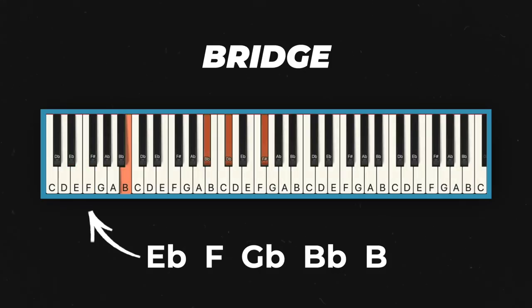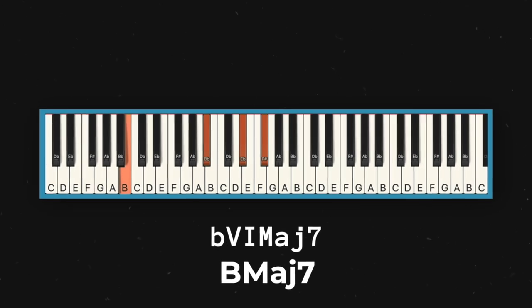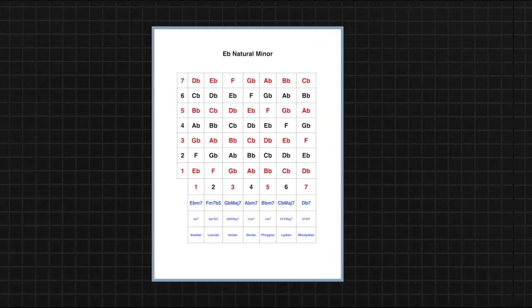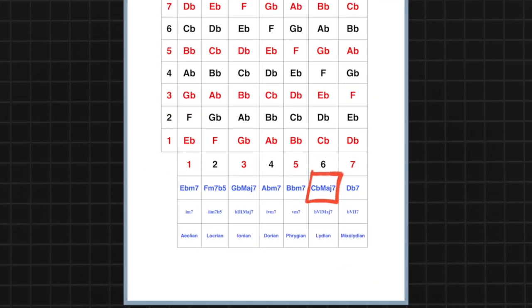So good. Onto the bridge. Right after that vocal run, the bass goes up, and we land on B major 7. This is the b6 major 7 chord, which sounds fancy, but it's actually in the Eb minor family.